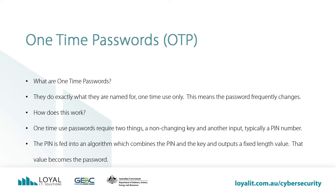What are one-time passwords? They do exactly what they're named for — one-time use only. This means the password frequently changes. One-time passwords require two things: a non-changing key and another input, typically a PIN number. The PIN is fed into an algorithm which combines the PIN and the key and outputs a fixed length value. The output becomes the password. Typically, the temporary password expires after 30, 60, 120, or 240 seconds.